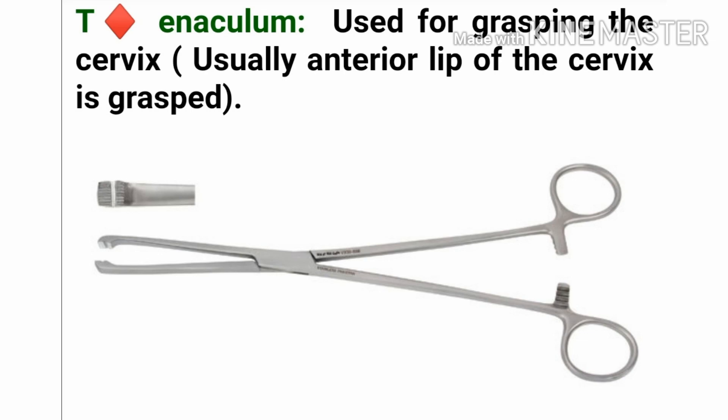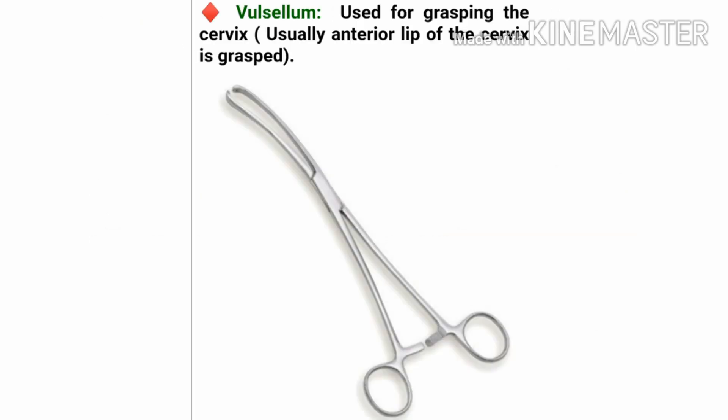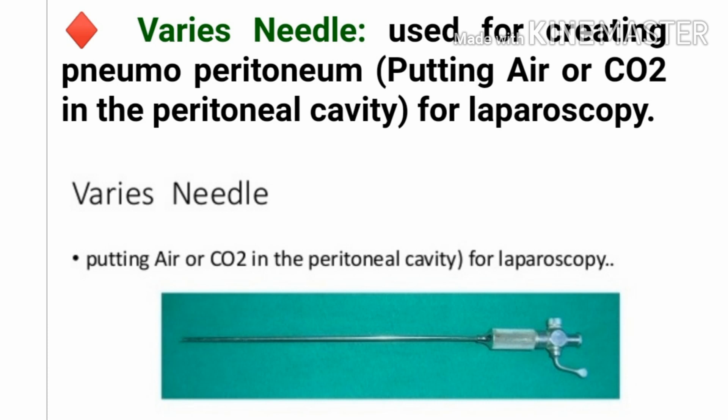This is the tenaculum, used for grasping the cervix — usually the anterior lip of the cervix is grasped with this instrument. This is the Valsellum, also used for grasping the cervix, typically the anterior lip. This is the Veress needle, used for creating pneumoperitoneum — putting air or CO2 into the peritoneal cavity for laparoscopy.